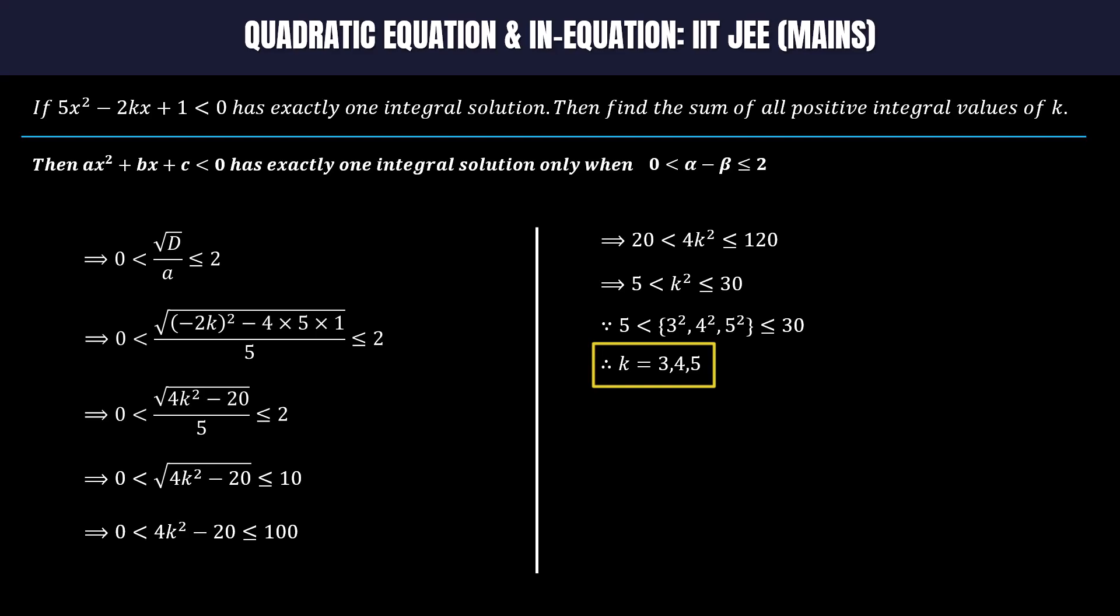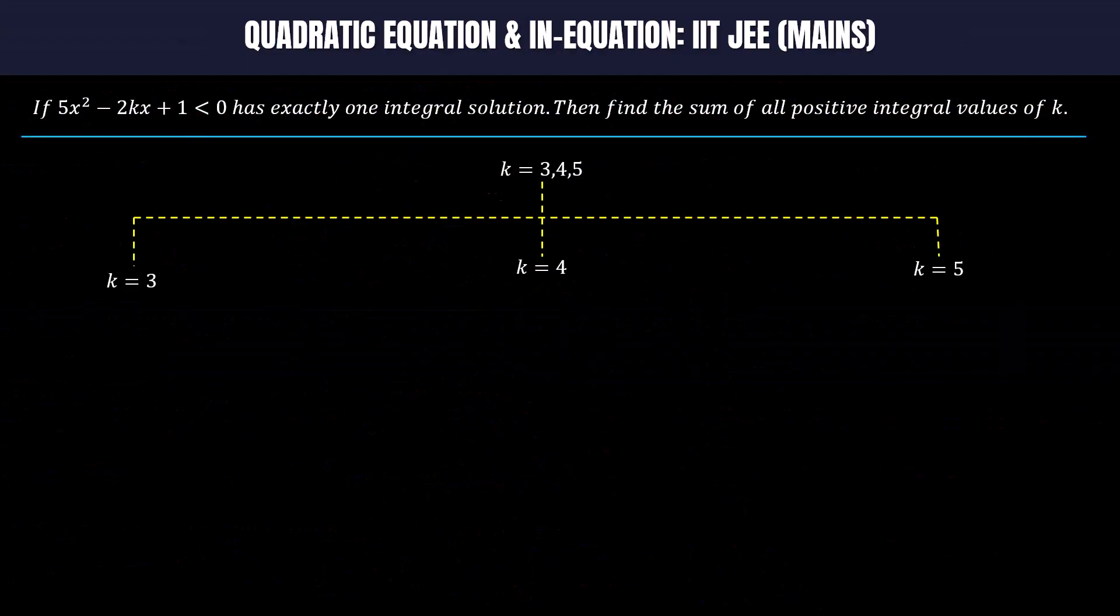But wait here. Don't add these numbers to get the answer. We have to check the correctness of solutions before answering. By substituting k equal to 3, 4, and 5, we get three different quadratic inequalities.